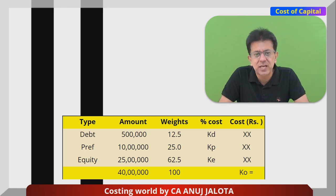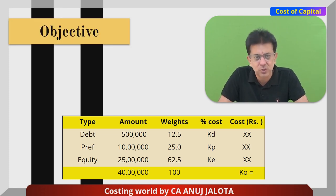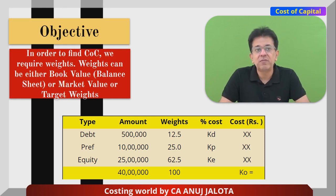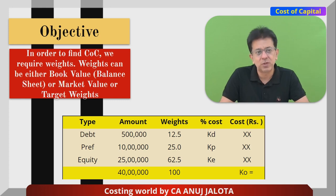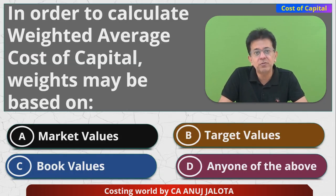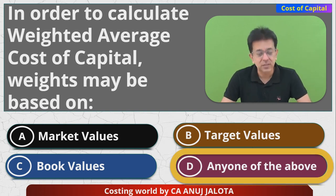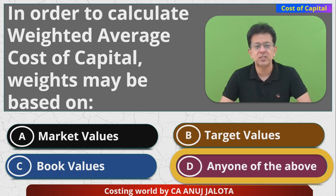So the weights I have calculated may be taken from book values or market values, or they may be based upon an ideal capital structure — which is also called target weights. You will then have your percentage cost and finally compute your overall cost. Therefore, to find out the cost of capital, weights can be book value, market value, or target weight. The answer is D — any of the above. That's the correct answer. Thank you, see you all next time, bye.